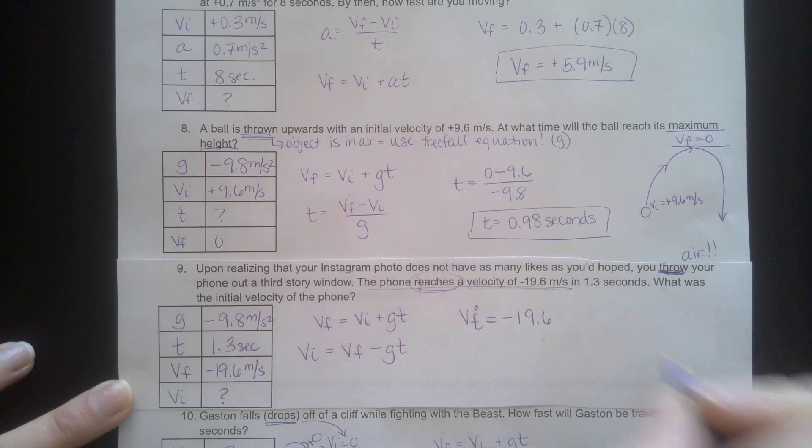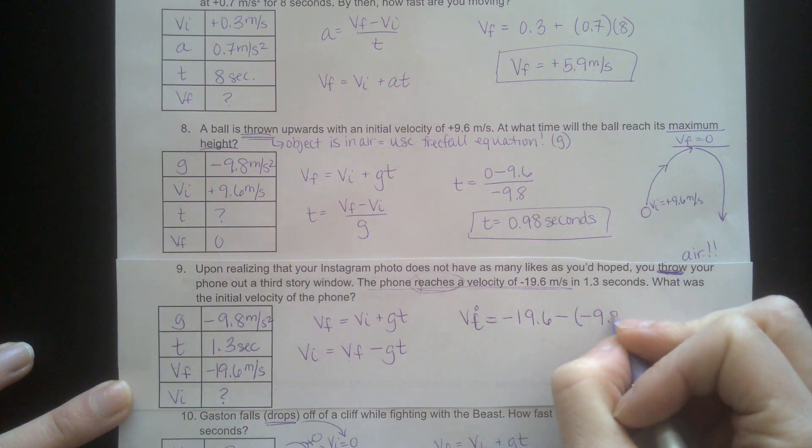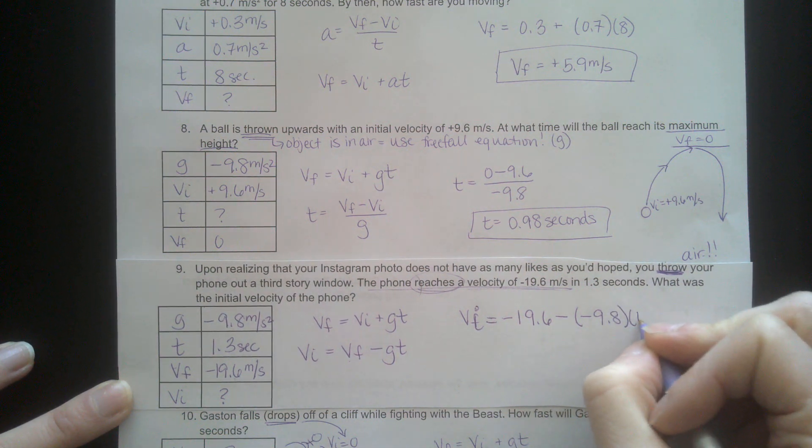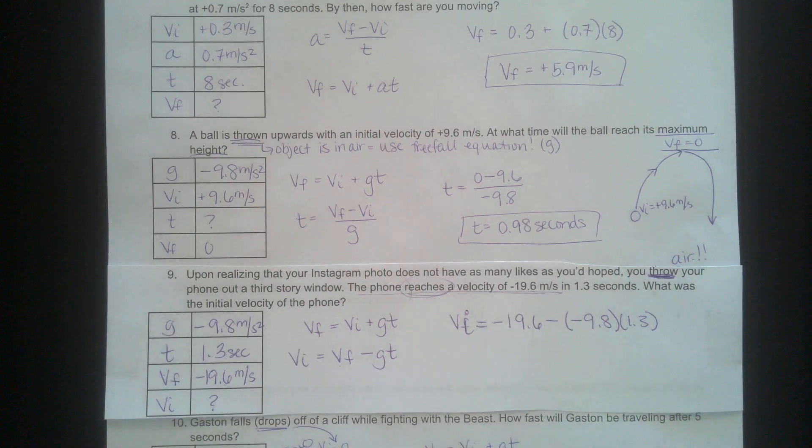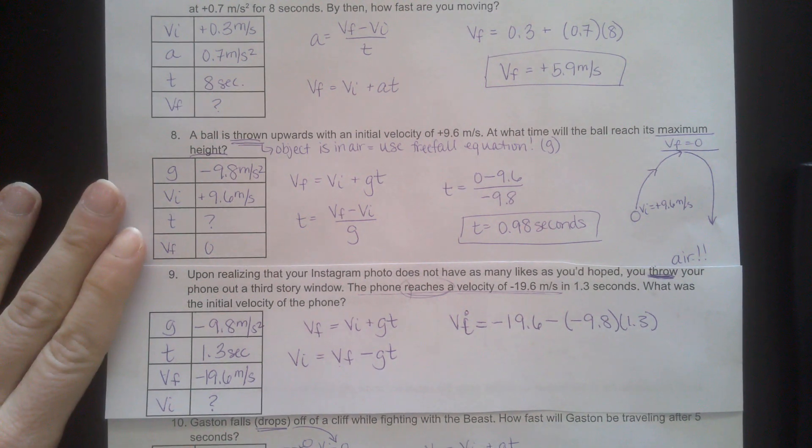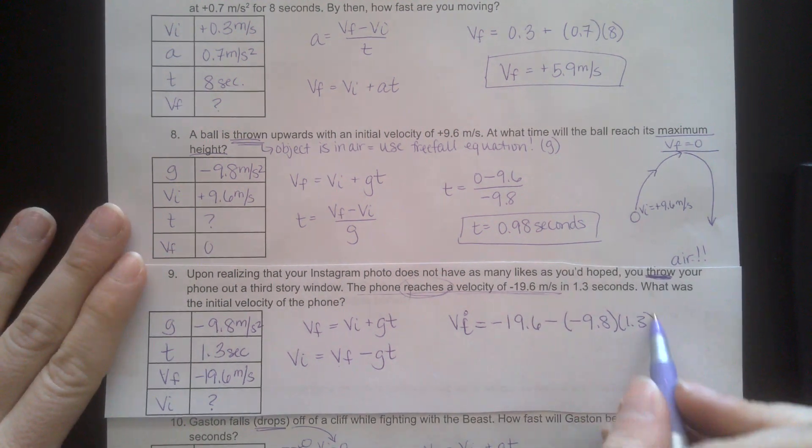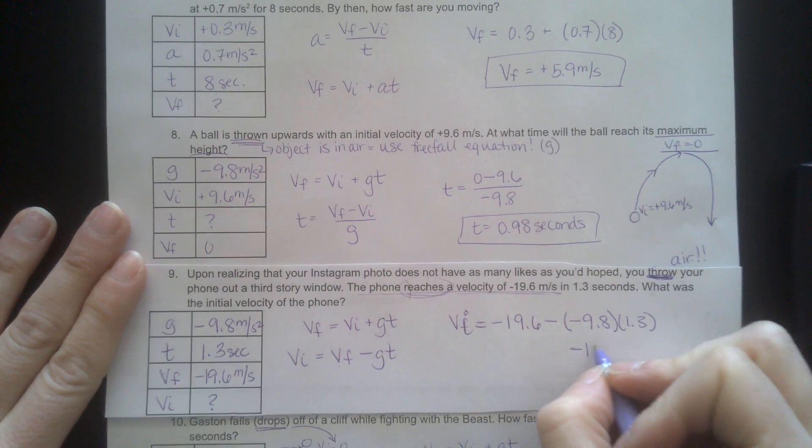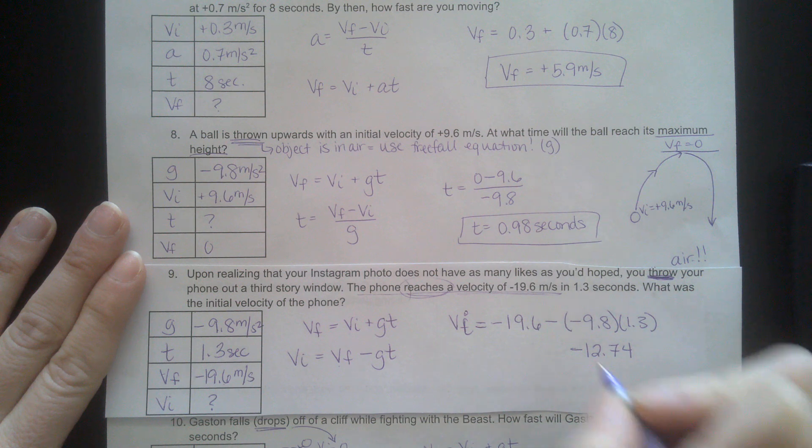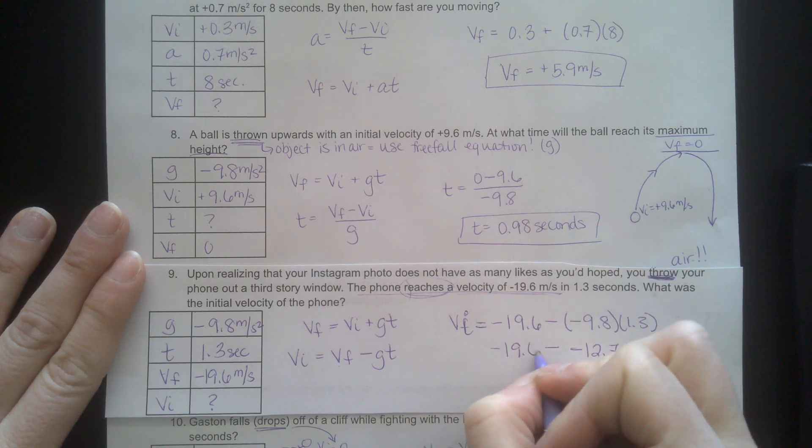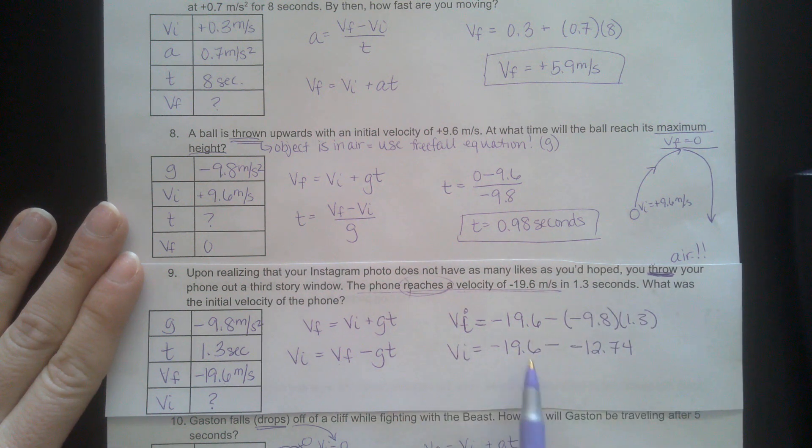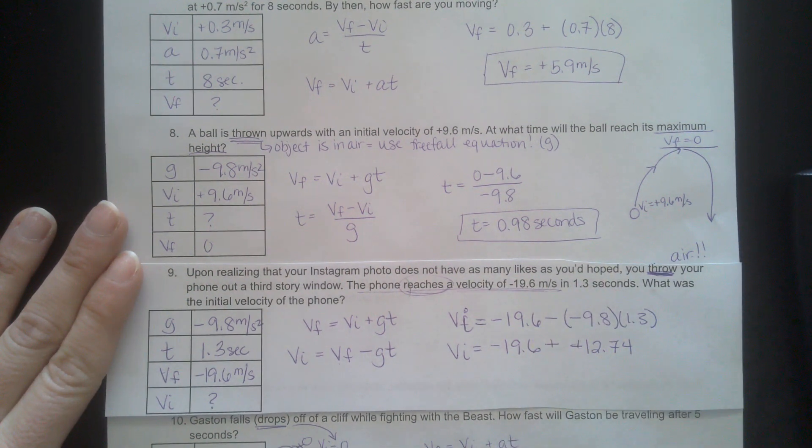If I want to solve for VI, I'm going to subtract over the GT. Now I can plug in my values. So VI equals VF, which is negative 19.6, minus G, which is negative 9.8, times T, which is 1.3. I'm going to break this down into two steps. 9.8 times 1.3, this portion right here is negative 12.74. I'm going to bring over my 19.6.